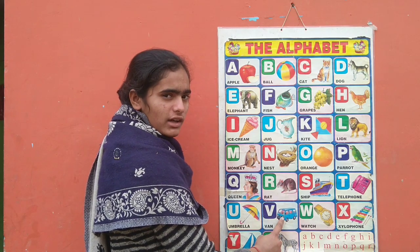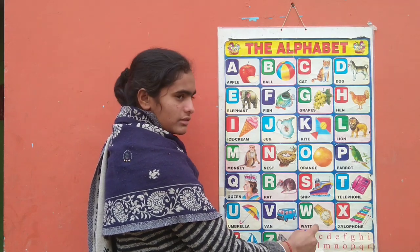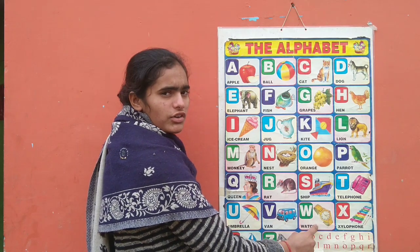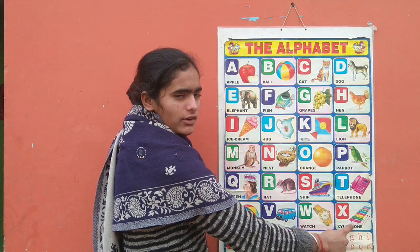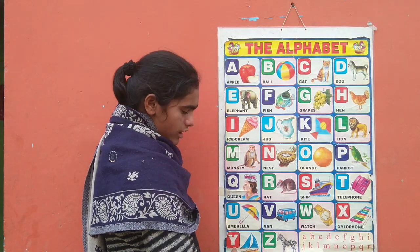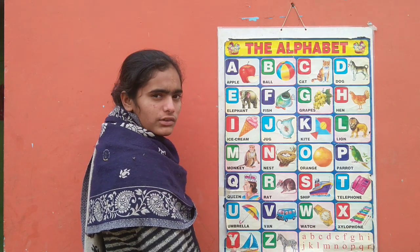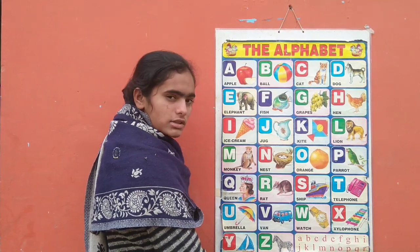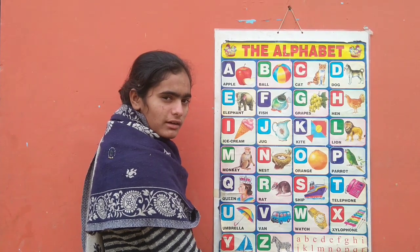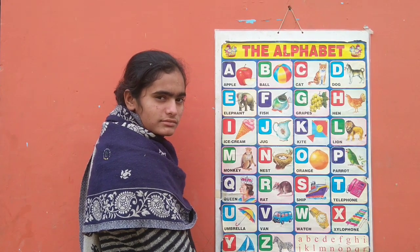V for van, W for watch, X for gylo phone, Y for yacht, Z for zebra.